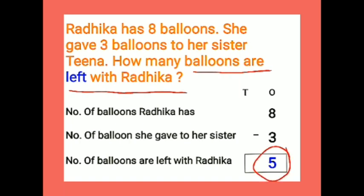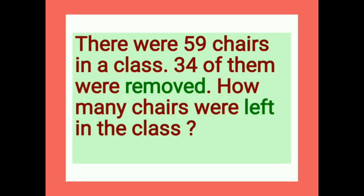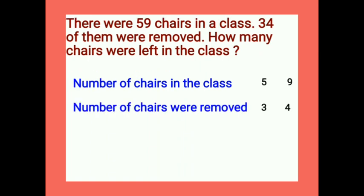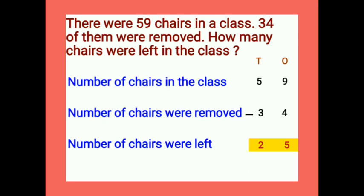When we subtract 3 from 8 we get 5. Let's see one more example. There were 59 chairs in a class; 34 of them were removed. How many chairs were left in the class? First statement: 'Number of chairs in the class — 59.' Second statement: 'Number of chairs removed — 34.' Answer statement: 'Number of chairs left.' When we subtract 34 from 59 we get 25, so there were 25 chairs left in the class.